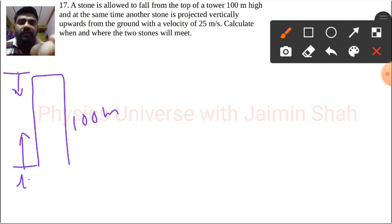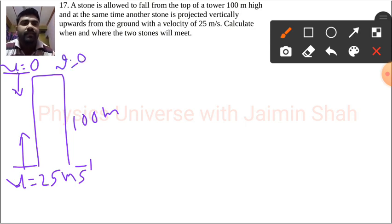The throwing velocity that we have is 25 meters per second, and here the initial velocity is 0. For the throwing object, its final velocity will be 0 because of that maximum height, and the velocity of that dropping stone we don't have now.